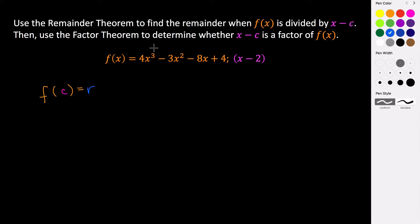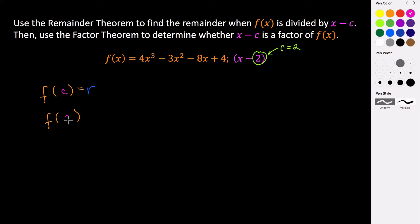So we want to figure out what is the remainder of f of x when I divide it by x minus 2 in this situation. When we divide by x minus 2, that means c is equal to positive 2, so we're going to evaluate our function at positive 2 — what is f of 2? So we want to know what f of 2 is, so let's substitute 2 in for x everywhere.